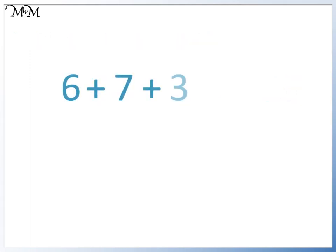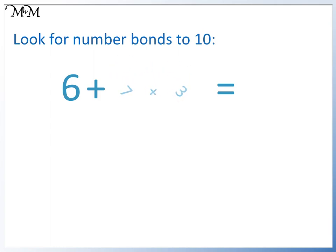Here we have 6 plus 7 plus 3. We look for a number bond to 10. 7 plus 3 is a number bond to 10. 6 plus 10 equals 16.